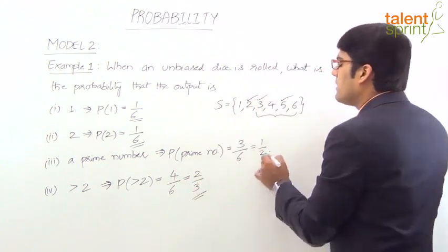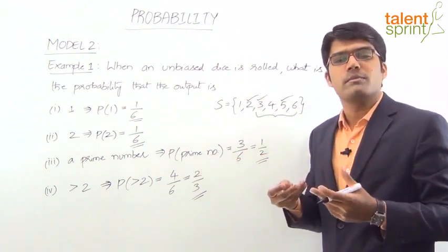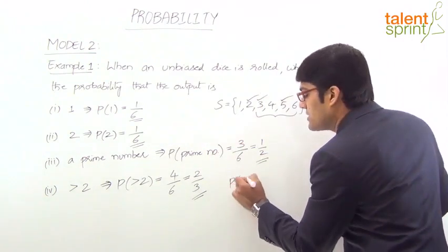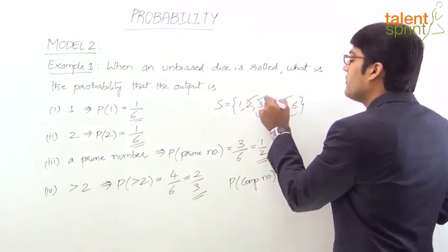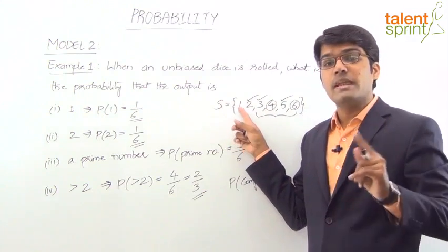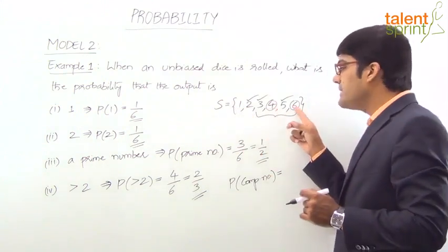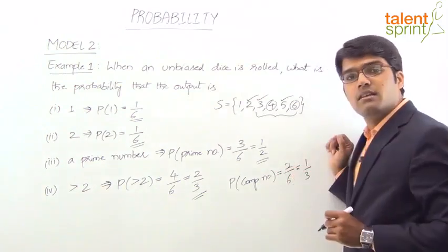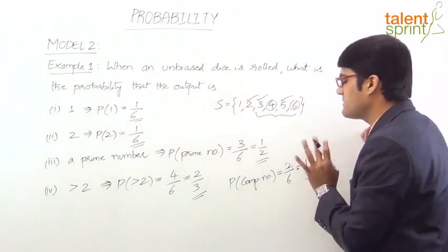What is the probability that the output is a composite number? The composite numbers in the sample space are 4 and 6. Remember that 1 is neither prime nor composite, so we do not consider it. Only two favorable outcomes: 4 and 6. The answer is 2/6, which equals 1/3.